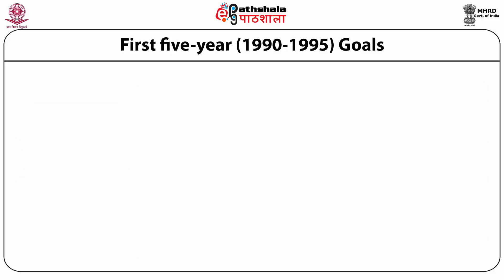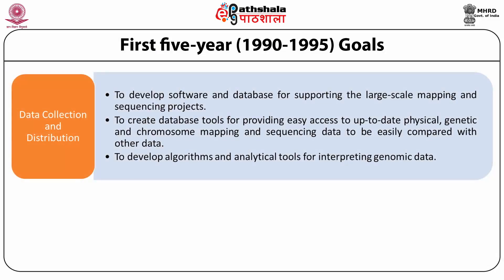The fourth goal was data collection and distribution, which involved development of software and databases for supporting large-scale mapping and sequencing projects, creating database tools for providing easy access to up-to-date physical, genetic and chromosome mapping and sequencing data, and development of algorithms and analytical tools for interpreting genomic data.